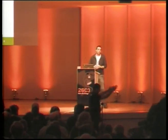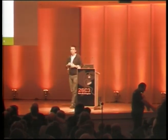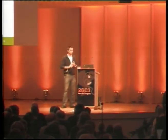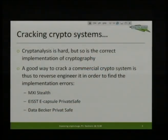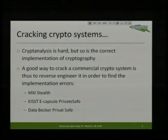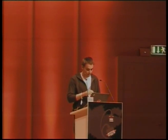We all do bugs. I did bugs when I program - it's awful. So if you want to be sure that your cryptographic system is secure, you have to make sure it uses the right crypto, but you also have to make sure there are no bugs in it. I want to give you a few examples where, by simple reverse analysis, we can find out what went wrong. There are three examples: MXI-STELS, eCapsule Private Safe, and Data Becker Private Safe. There's no zero day in any of that - this is old stuff, but it's nice examples showing how this works.